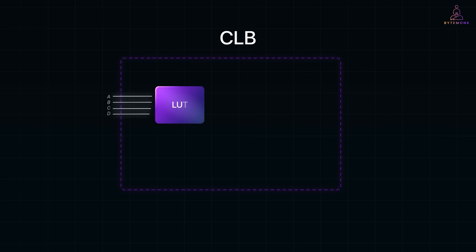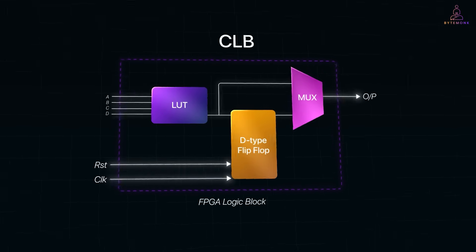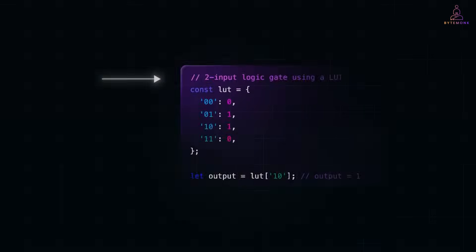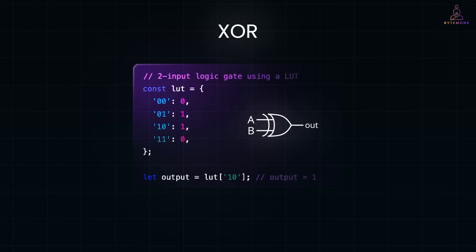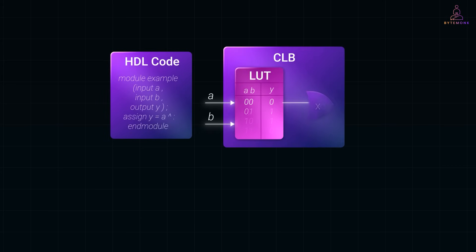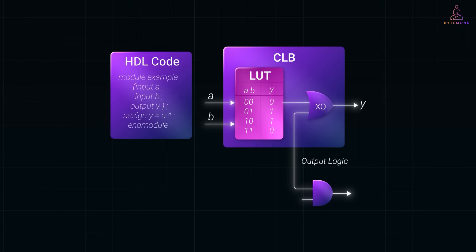We'll break down key concepts like logic blocks, LUTs, programmable interconnects and IO blocks, and explain what happens when you program an FPGA — not with software instructions, but by configuring the hardware itself. By the end, we'll have a clear picture of how FPGAs achieve their speed and flexibility, and why they are so powerful for industries like finance, telecom and AI.